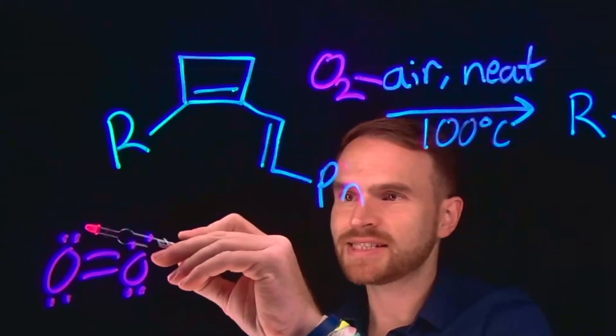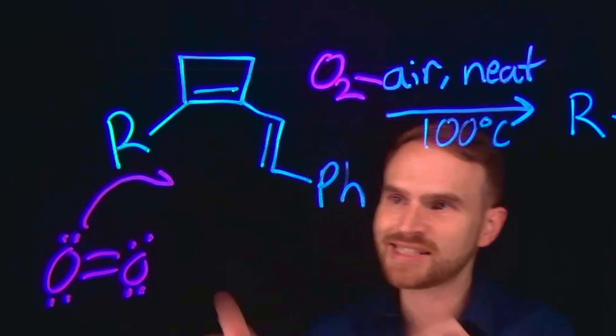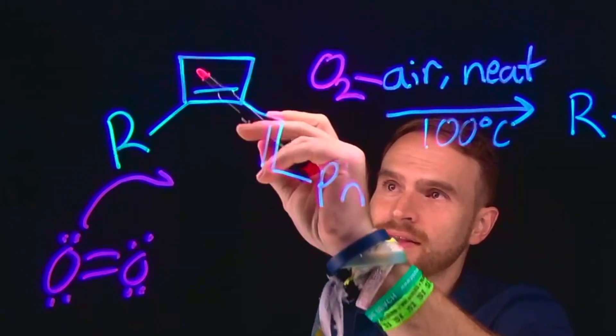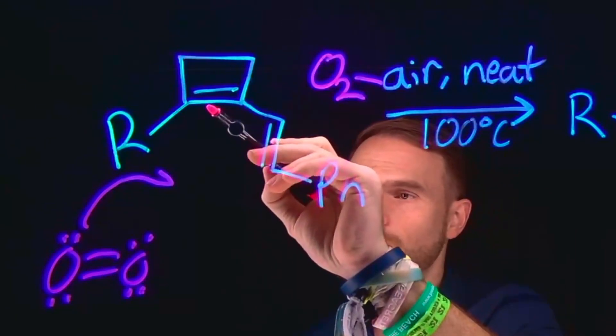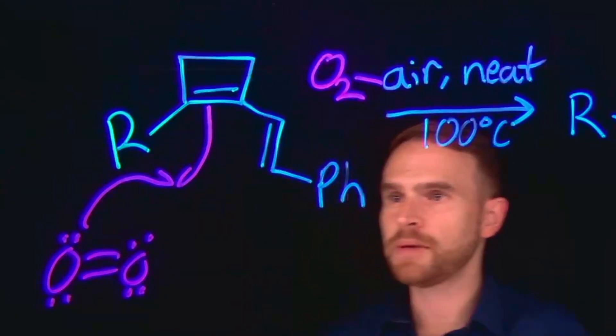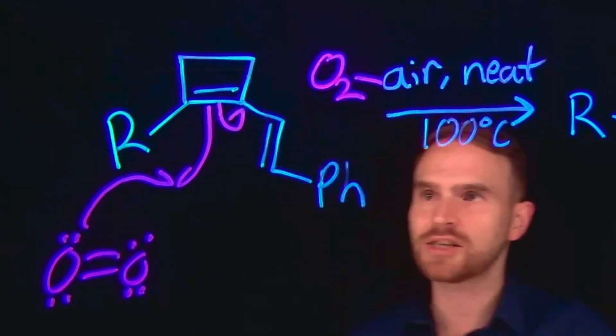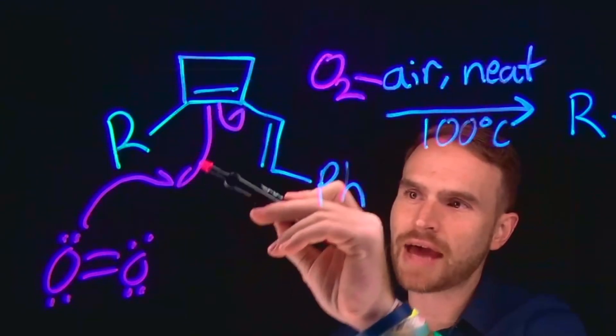Which means that we can have a single electron, which we'll draw as a single half-headed arrow, reacting with this pi bond in this cyclobutane ring. So one of those electrons will come here, and one of the other electrons in that pi bond will go to this carbon. So remember we depict those with a half arrow.